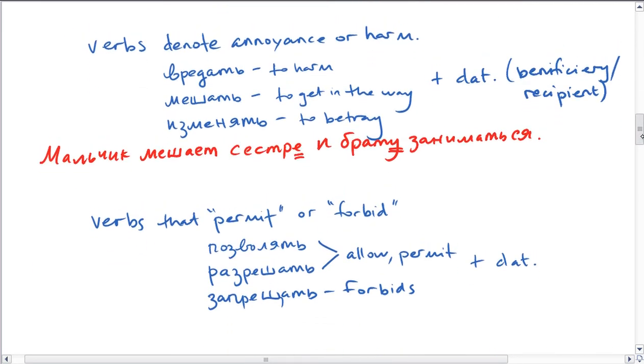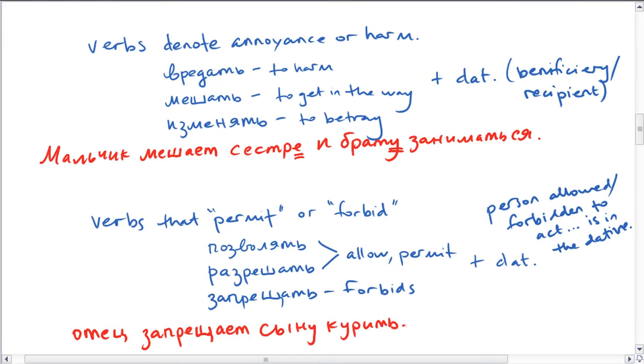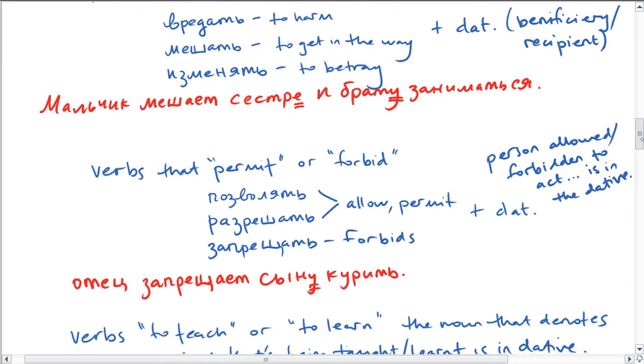So let's just look at one example. Мальчик мешает брату и сестре учиться. So the little boy is getting in the way of his brothers and sisters studying. So the sister and the brother are both beneficiaries or recipients of this getting in the way, and so they're in the datum case. We also use the datum case after verbs that permit or forbid something. Позволять, разрешать both mean to allow or to permit to do something, and the person who is allowed or permitted to do something is in the datum case. Or запрещать is to forbid someone. So the person allowed or forbidden to act or do whatever is in the datum.